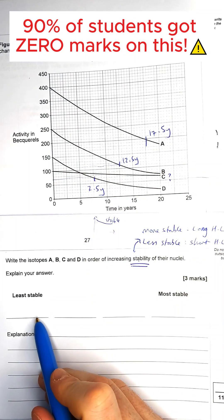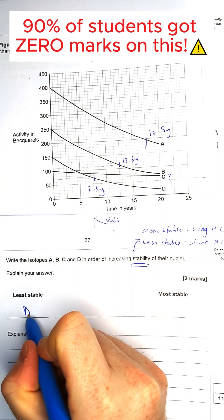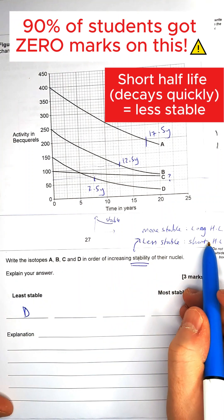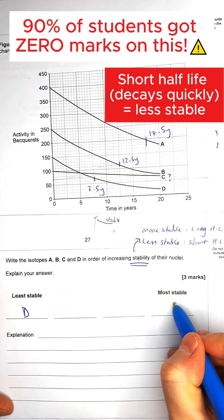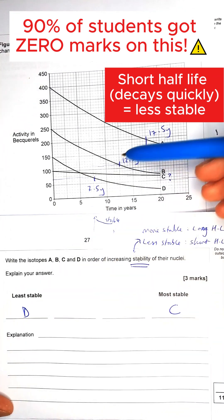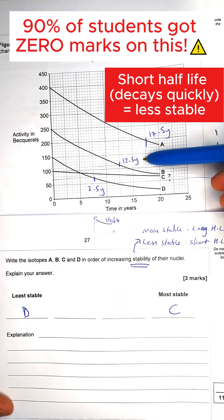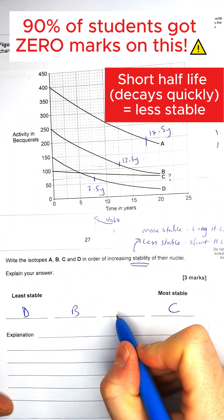So the least stable is going to be D, because it has the shortest half-life. The most stable is C, because the half-life we can't see from the graph, but it's longer than 25 years. Next we've got, after D, the least stable is the shortest half-life, which is going to be B, and then it's going to be A.